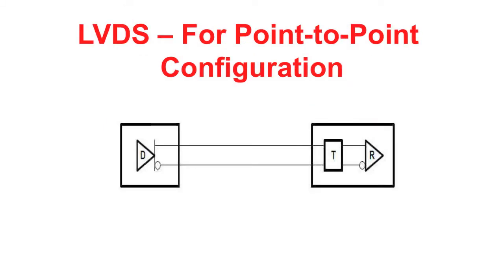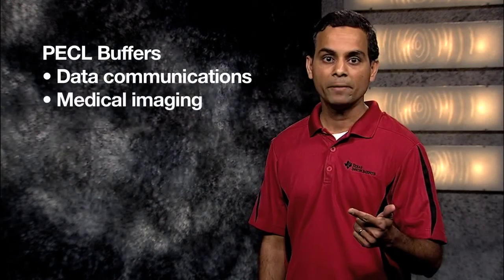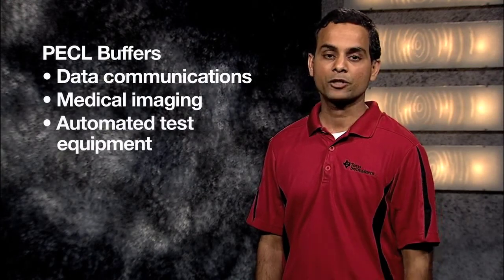LVDS buffers are often used for point-to-point transmission of clock and data signals. Texas Instruments offers a wide range of LVPECL, PECL, and ECL signal buffers and translator devices with speeds ranging from 300 megahertz up to 3.8 gigahertz. Applications where PECL buffers are typically used include data communications, medical imaging, and automated test equipment.